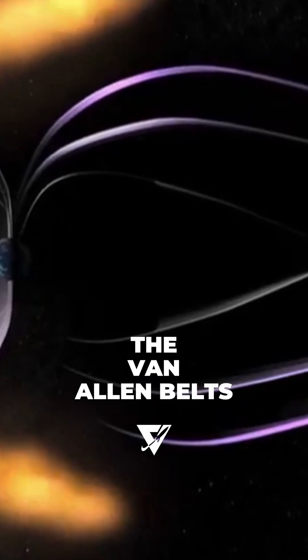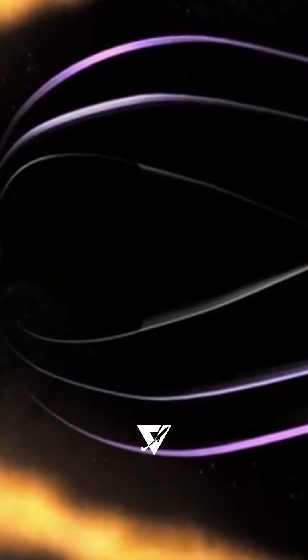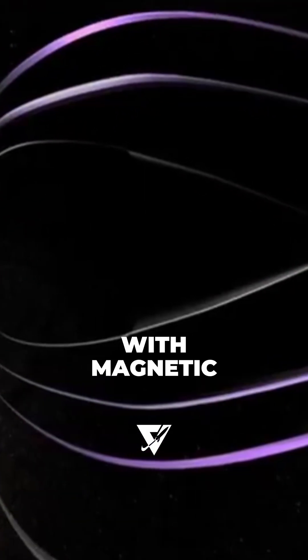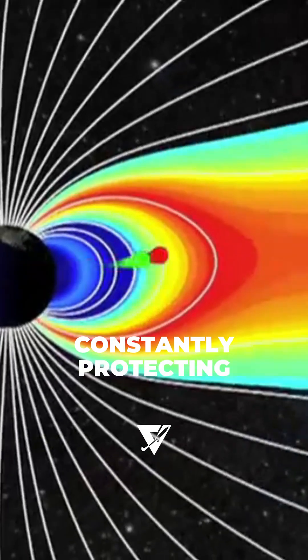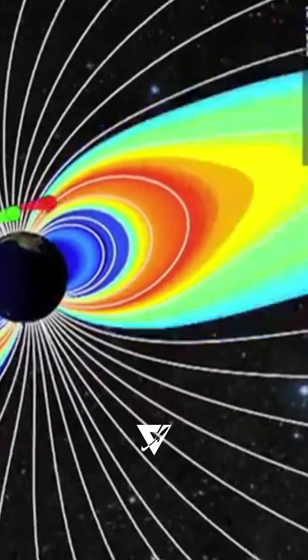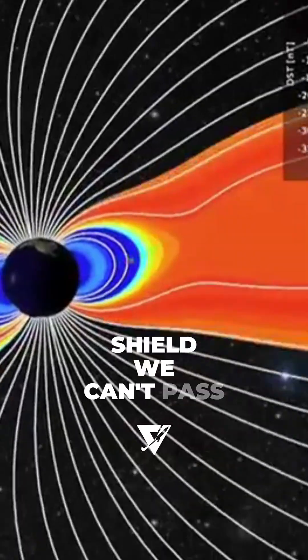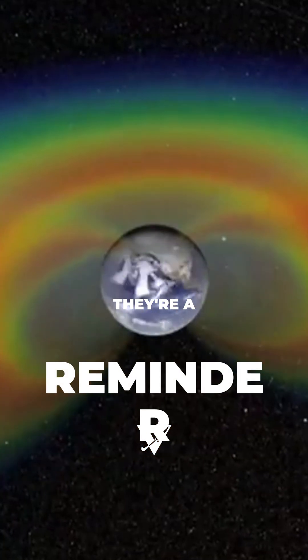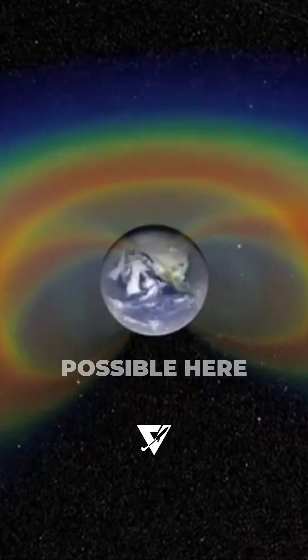The Van Allen belts tell a deeper story. Earth is alive with magnetic power, constantly protecting us from the sun's rage. They're not a shield we can't pass. They're a reminder of the shield that makes life possible here.